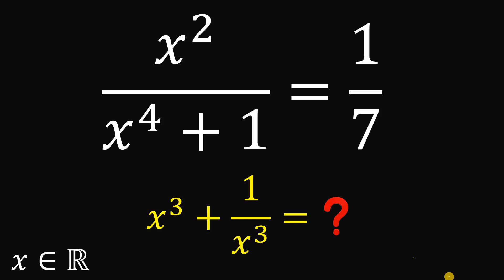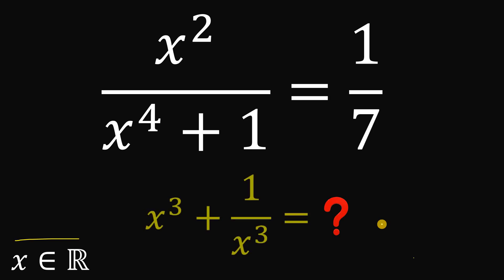For today's video we will answer a math challenge given by one of our followers. The question goes like this: given the equation x squared over x raised to the fourth power plus one equals one over seven, wherein x is a real number, our goal is to find the numerical value of x cubed plus one over x cubed. You can pause this video if you want to give this problem a try.